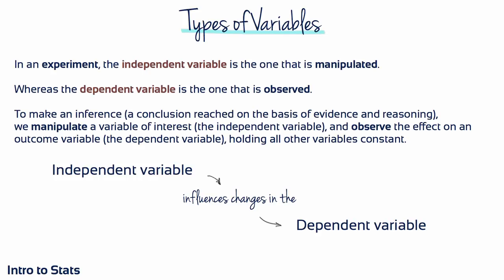A researcher examines the effects of two variables on memory. One variable is beverage — coffee or water — and the other is the aspects of a story to be remembered. Drinking the beverage comes before the study participants listen to the story and try to recall its aspects. The researcher decides who gets coffee and who gets water, so beverage is the independent variable. The aspects of the story recalled is the dependent variable — that's what's being measured to assess the effects of beverage on memory.